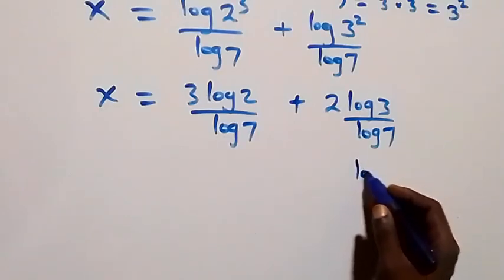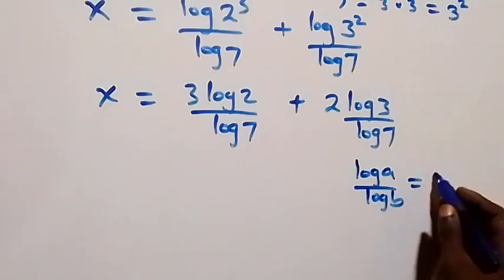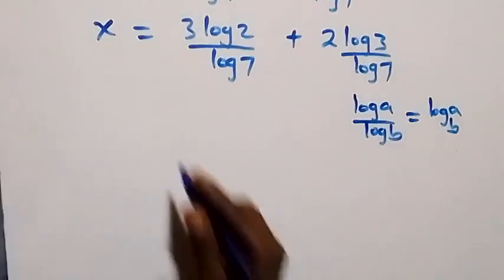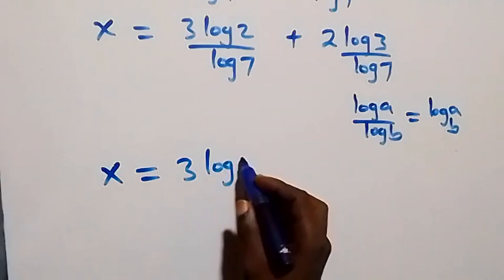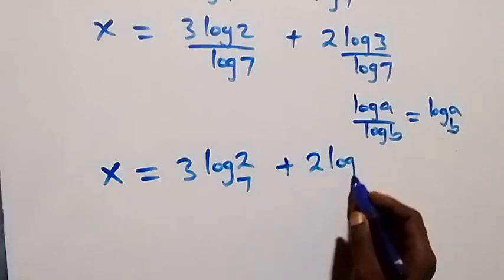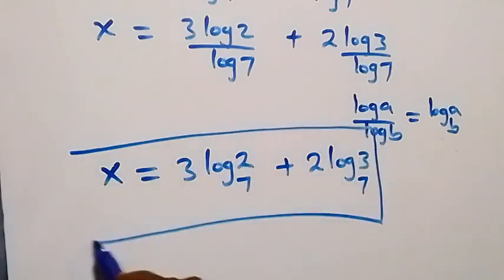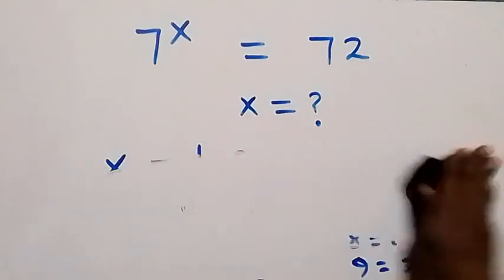Now applying the change of base formula — log a over log b equals log a to base b — we can write x equals to 3 log₇2 plus 2 log₇3. So the value of x in this given problem is 3 log₇2 plus 2 log₇3. Let's check if this solution satisfies the given problem.